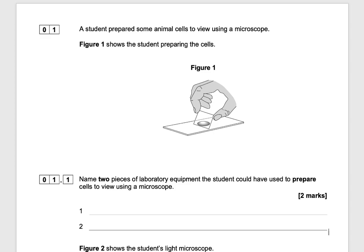Our first exam question states a student prepared some animal cells to view using a microscope. Figure 1 shows the student preparing the cells. We need to name two pieces of laboratory equipment the student could have used. In the figure we can see a slide and a coverslip, so we can use these two pieces of equipment to view the cell using the microscope.